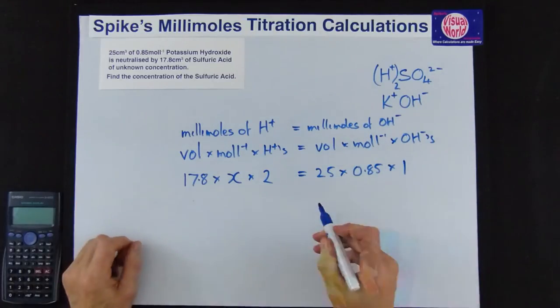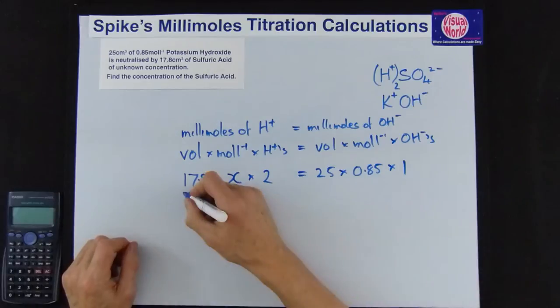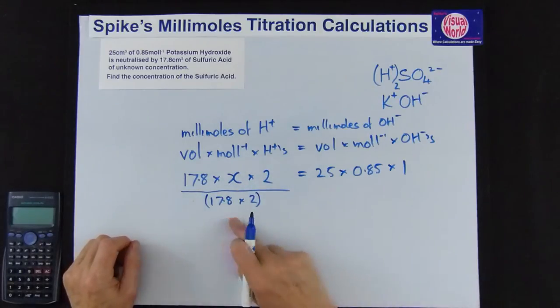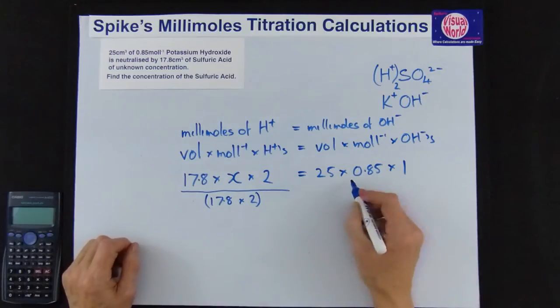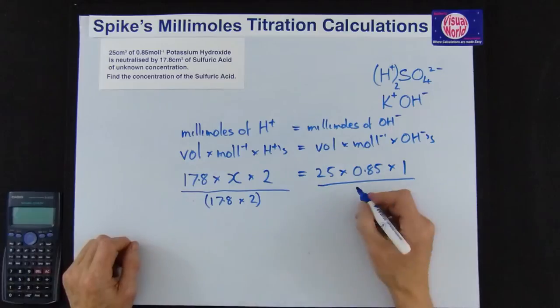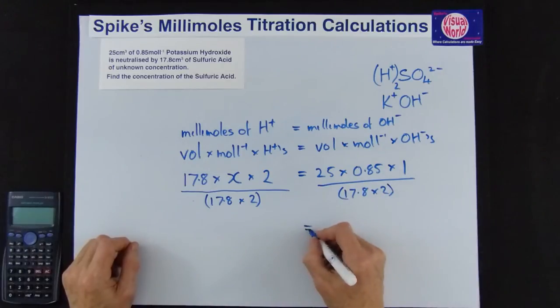So all we need to do is get X on its own. So to get X on its own we've got to divide by 17.8 and also the 2. Remember to bracket if you get more than one thing on the bottom you've got to bracket it or you get the wrong answer in the calculator. If you divide that side by that amount to keep it balanced we must divide the other side by the same. And all that's left now because they're going to cancel out to leave the X.